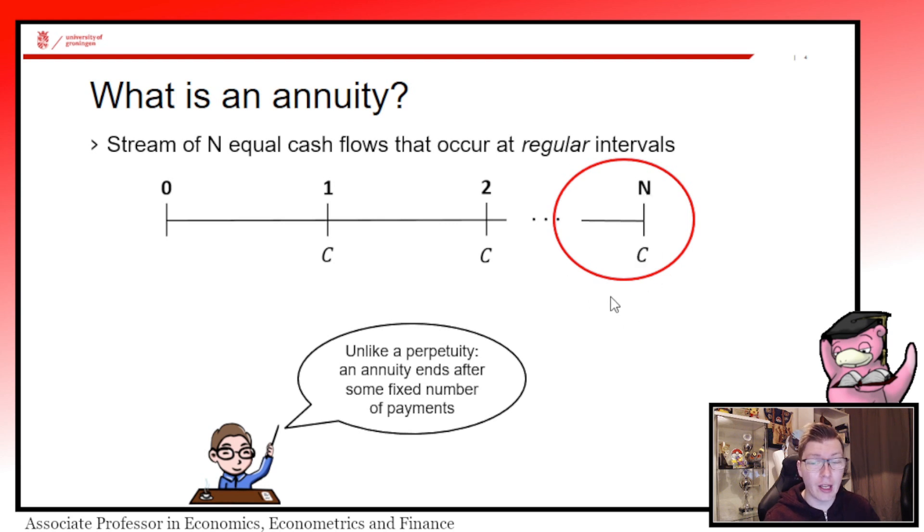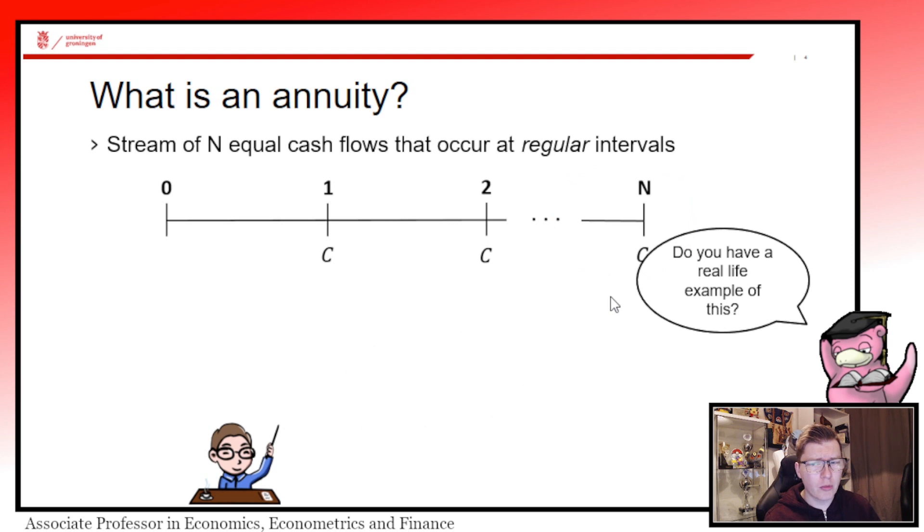Real life examples - the first one that springs to mind is a mortgage. You have a mortgage for 30 years when you pay out your house. That is an annuity because typically it's set such that you pay the same amount every month up until a certain point in time, say 30 years. That is a very standard example of an annuity.